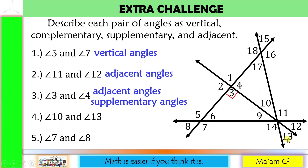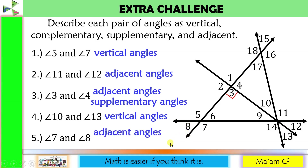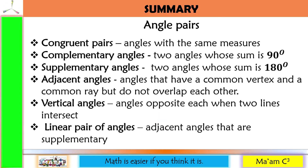The next one — angle 10 and angle 13 — they are vertical angles. The last one, angle 7 and angle 8: they share a common side, so they are adjacent angles. And their non-common sides form opposite rays or a straight line, so they are also supplementary angles.